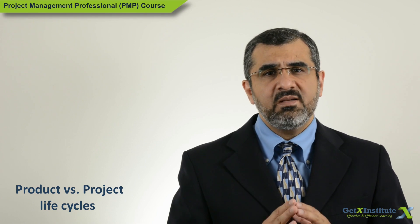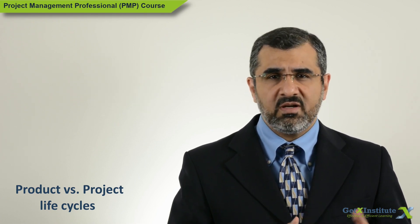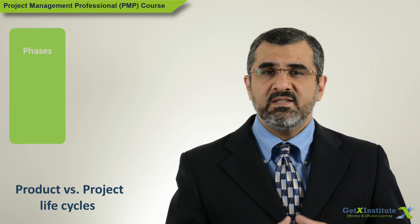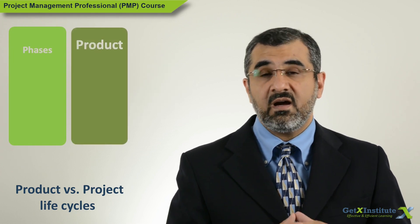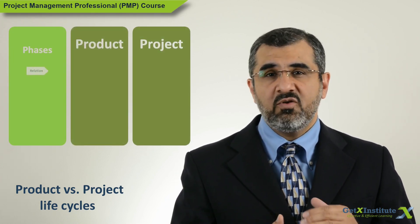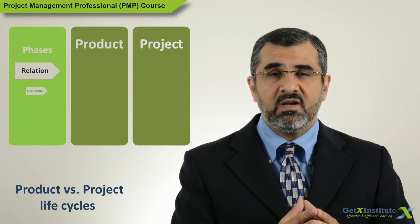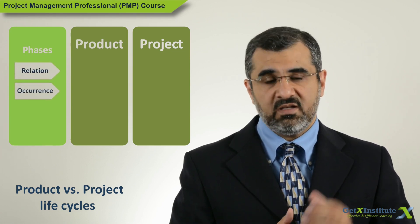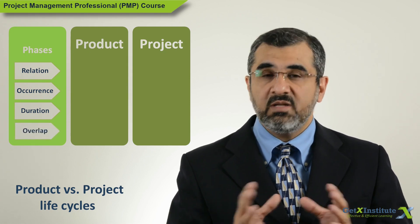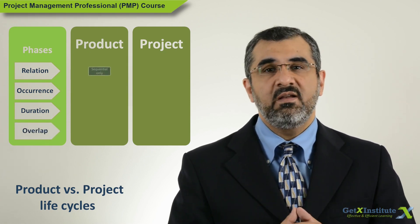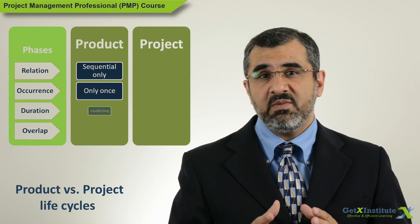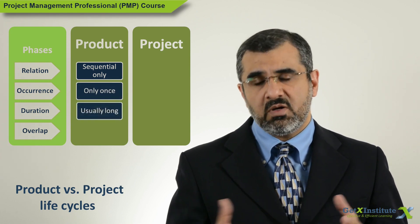There are some key differences between a product and a project life cycle. Phases in the product life cycle are sequential in nature and they do not overlap — so the product is either in the growth phase or the maturity phase, but not in both at the same time. However, the project life cycle can be sequential or overlapping.